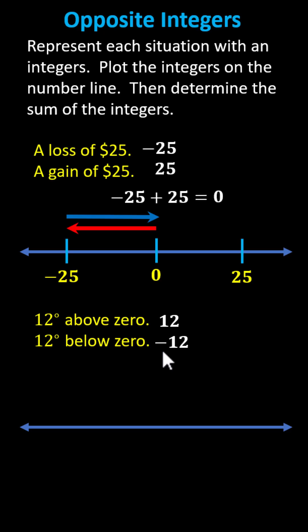And now we plot the integers on the number line. With zero in the middle, positive 12 is 12 units to the right of zero, and negative 12 is 12 units to the left of zero. Once again, notice the integers have opposite signs but are the same distance from zero. So 12 and negative 12 are opposites.